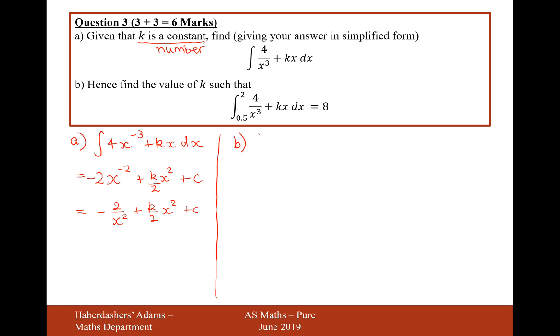So, given that we've integrated the same thing, we can just write our answer inside square brackets between the boundaries of 0.5 to 2. But remember, when you integrate between limits, you can drop the plus c. So we'll drop that c, so it's going to be minus 2 over x² plus k over 2 x².